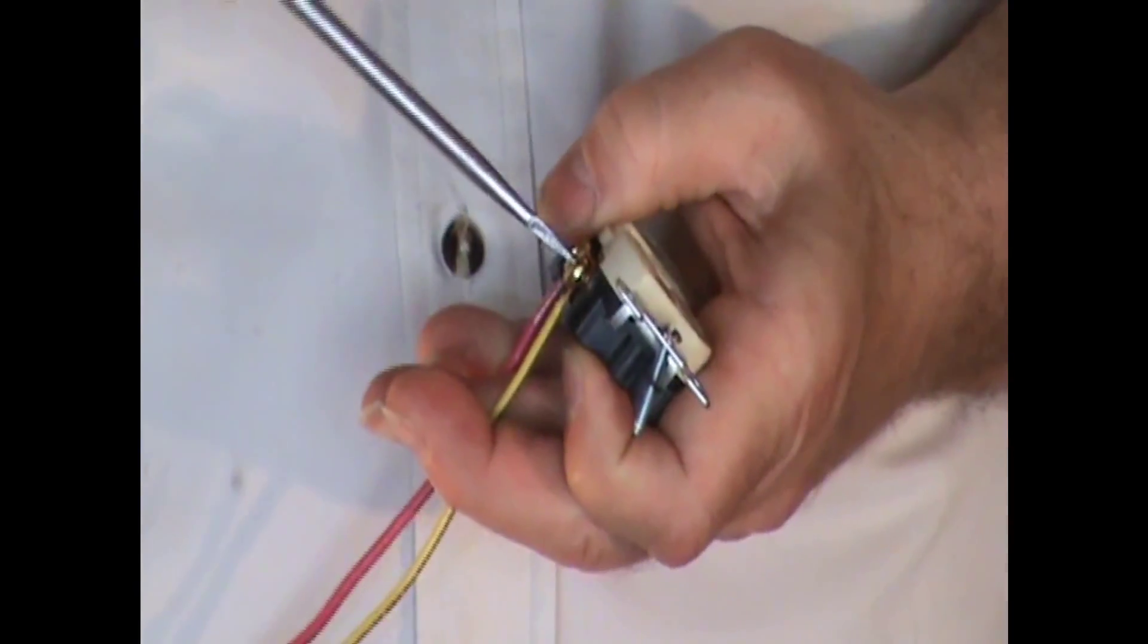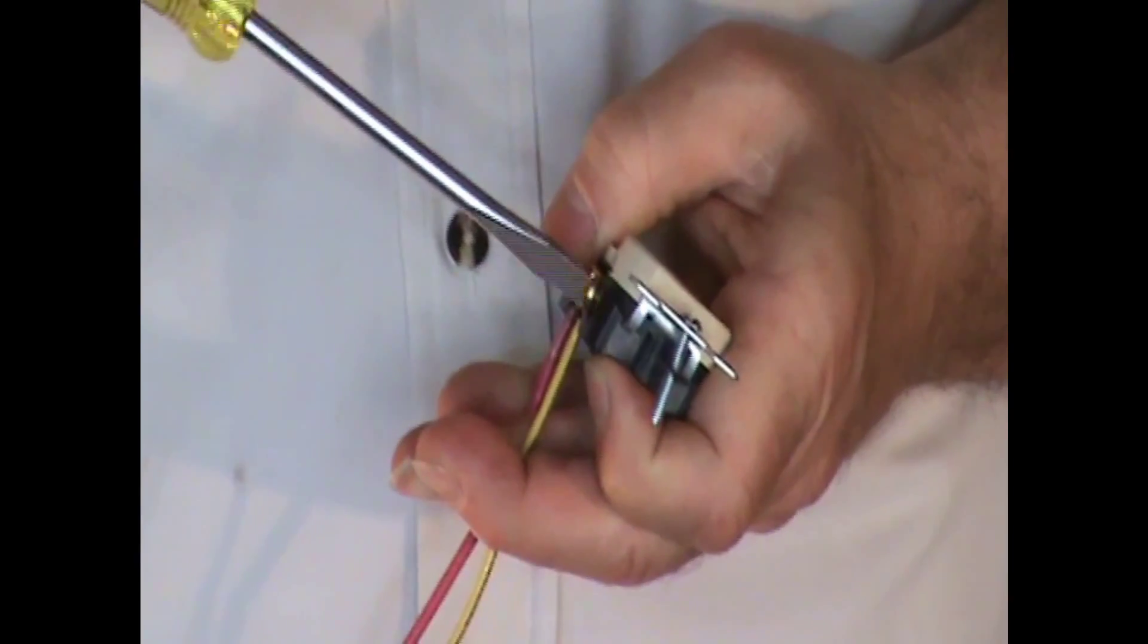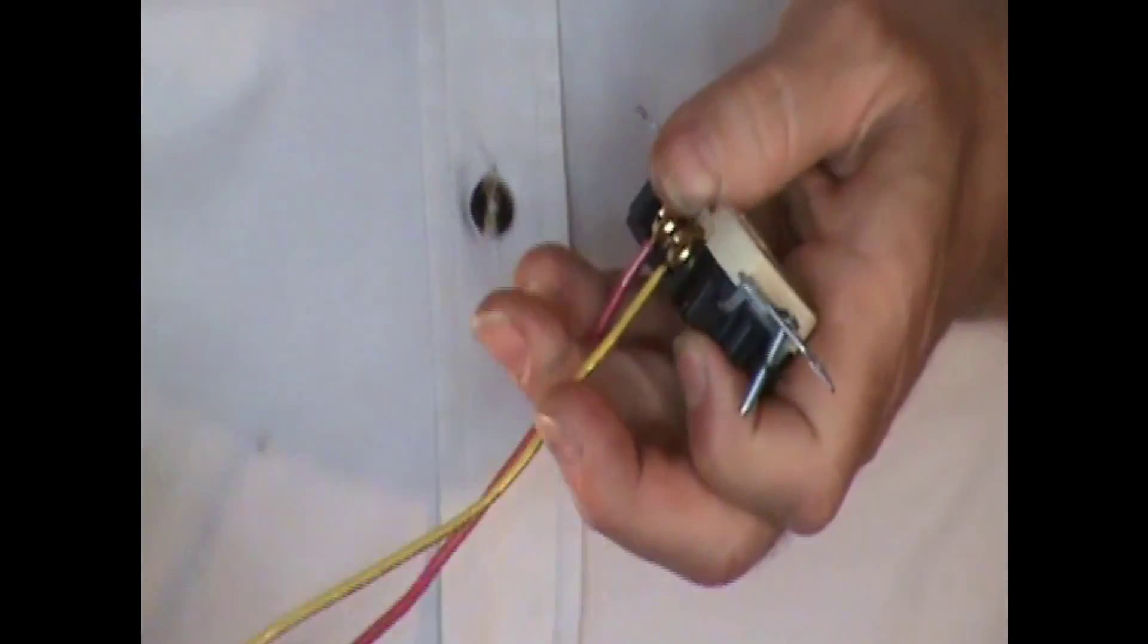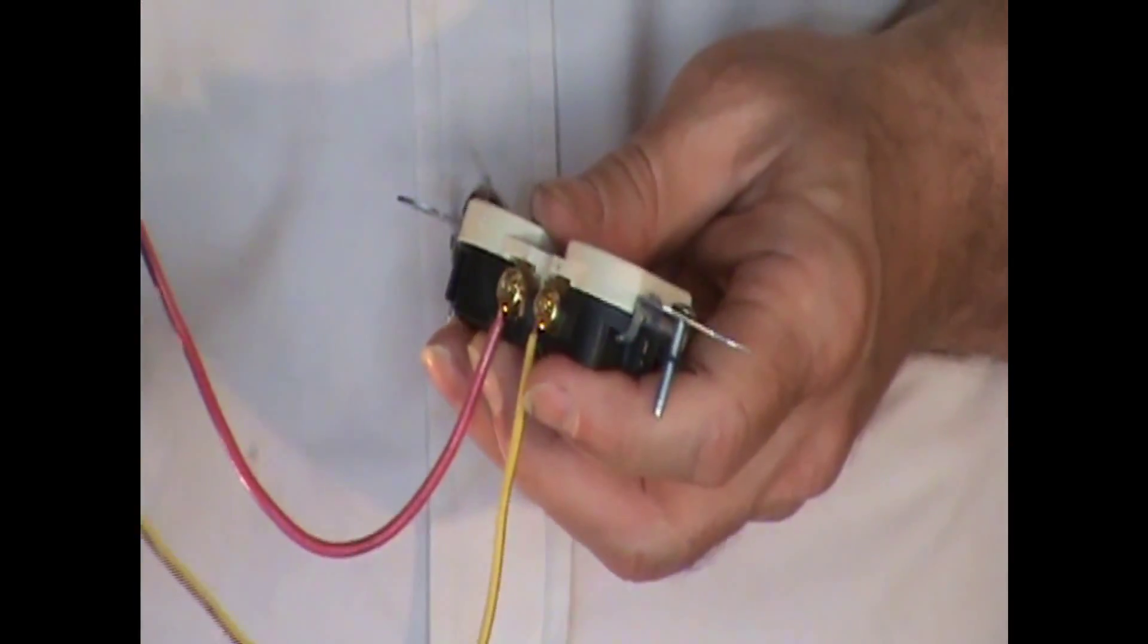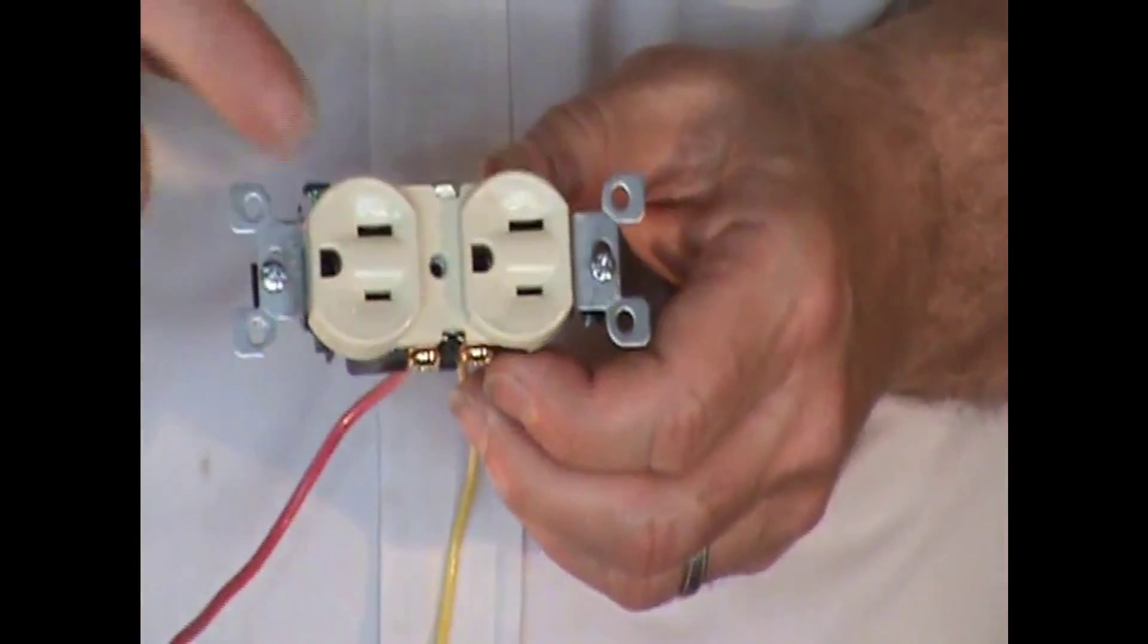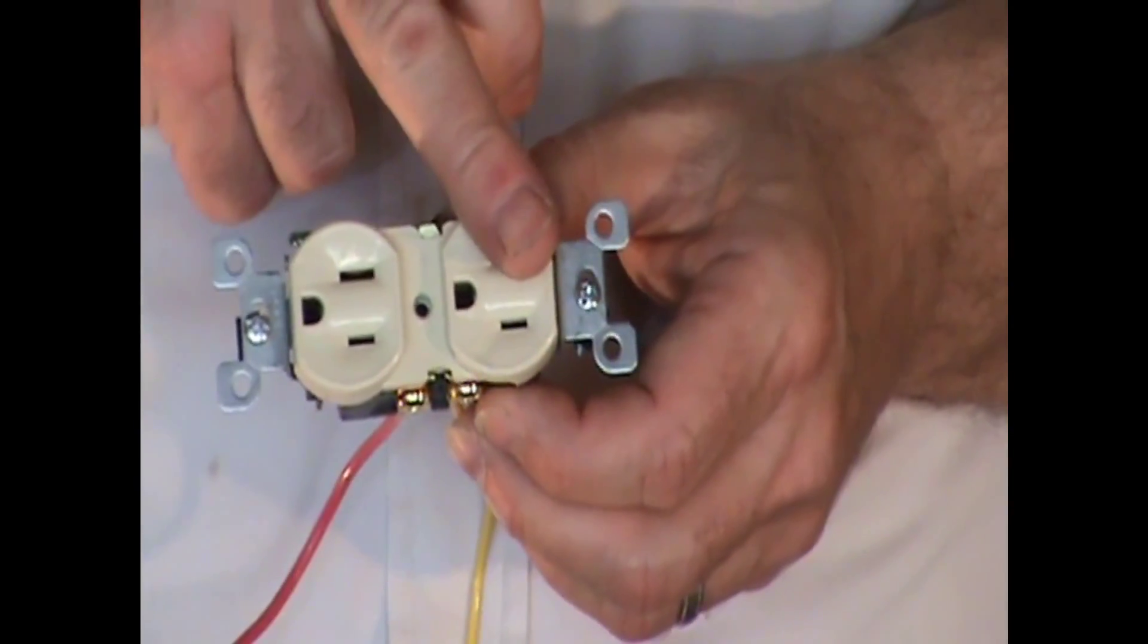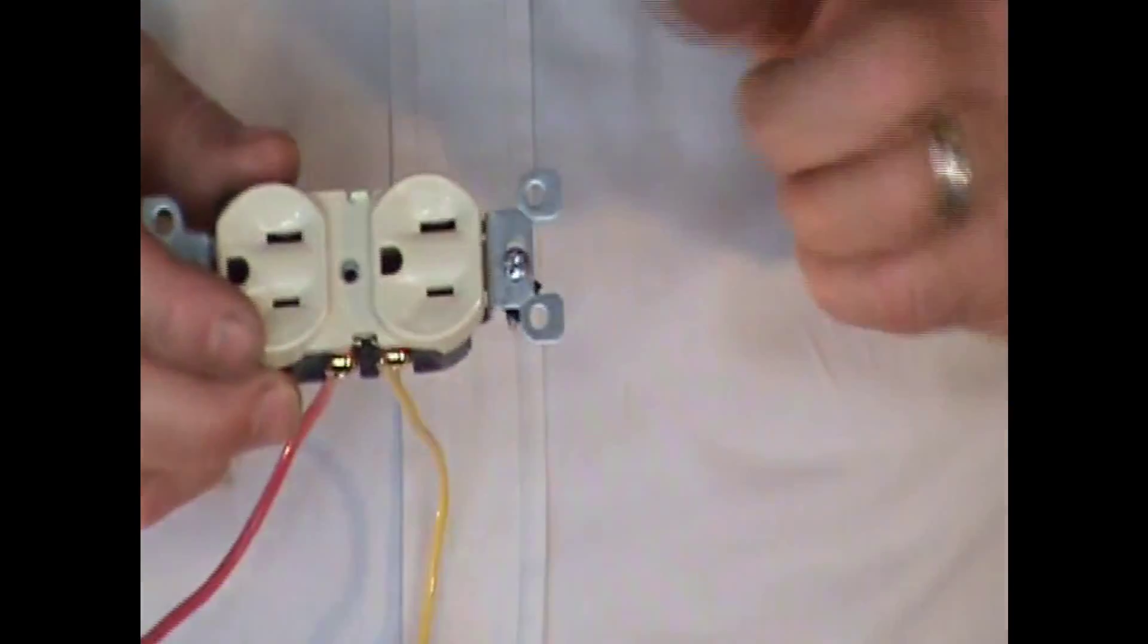Now that switch leg, or that yellow wire, runs through the pipe and goes to the switch, so that this red one is energized all the time, and this yellow one is energized when the switch is turned on. So now you have one side of the receptacle that's hot all the time, and the other side is operated by the wall switch. That's how you wire a switched receptacle.